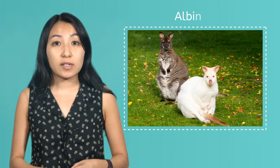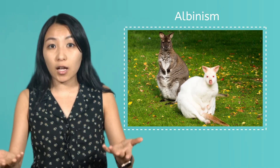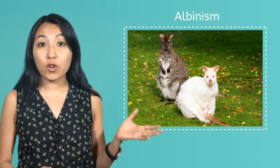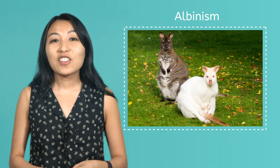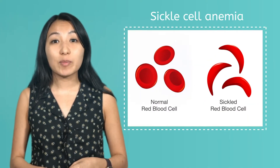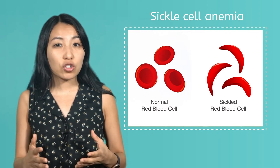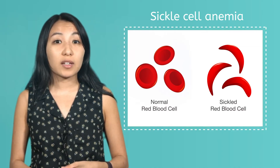Errors that affect the way proteins are made can have a variety of effects. For example, a condition called albinism is the result of a mutation that affects proteins responsible for pigment, or color. Without these pigments, this wallaby's fur is white instead of its usual brown color. Another example is sickle cell anemia, which is caused by a mutation that affects the structure of red blood cells, making them less effective at delivering oxygen in the body.